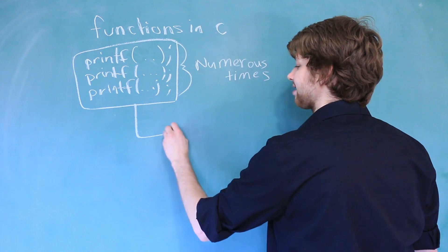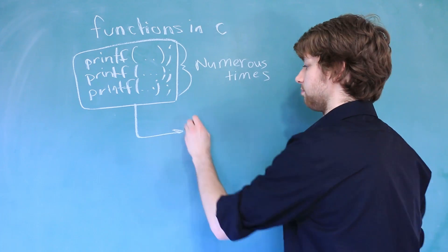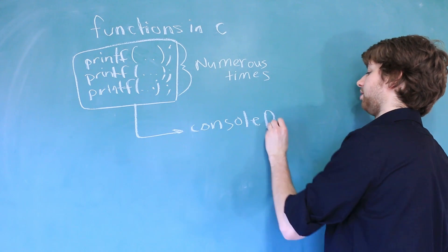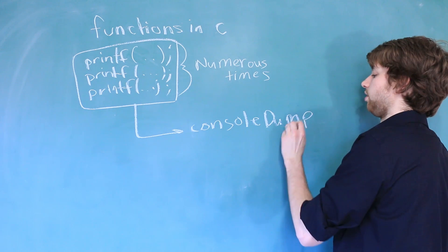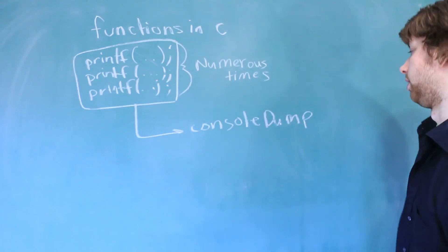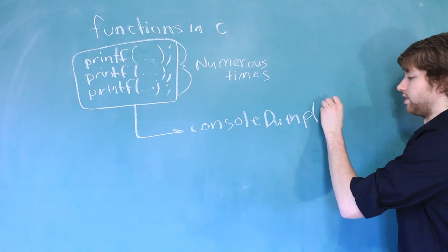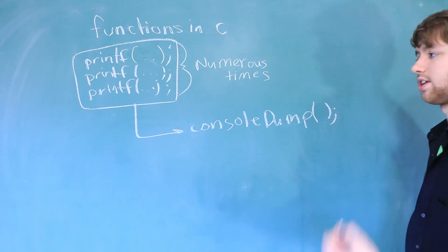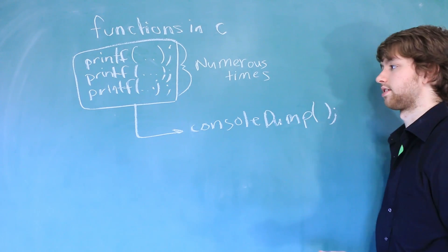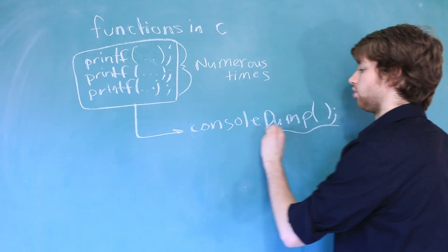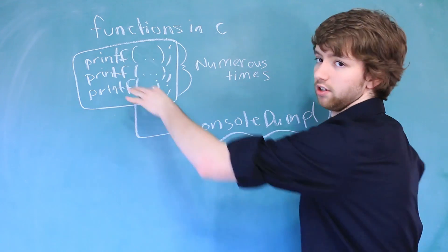Anyways, you could execute all three of these at one time and give it some kind of name like console dump. We're just dumping all the information straight to the console. And then we can just call that using these parentheses. That is essentially what a function is. It's a shorthand to calling a bunch of statements.